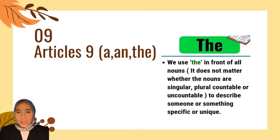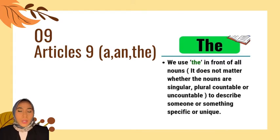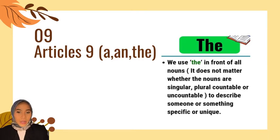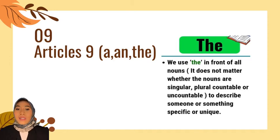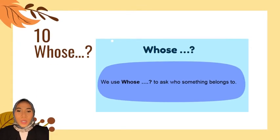Now, the article 'the' is used when we have already talked about the noun before. For example: a girl is standing behind the tree — the girl is wearing a pink skirt.